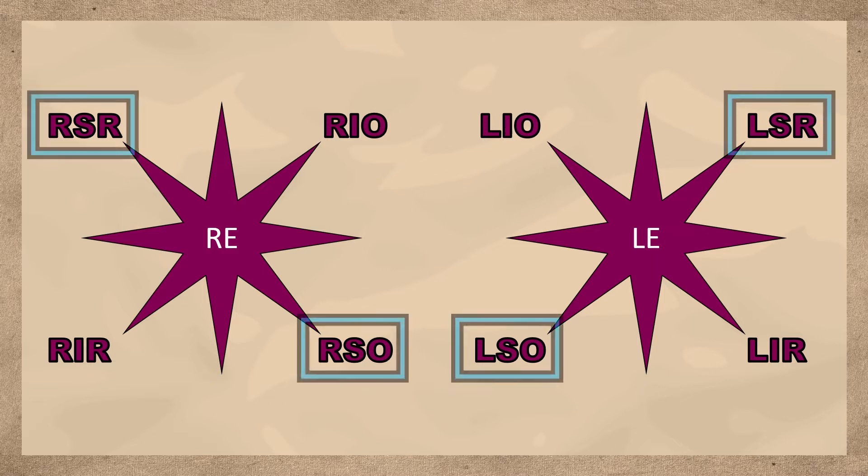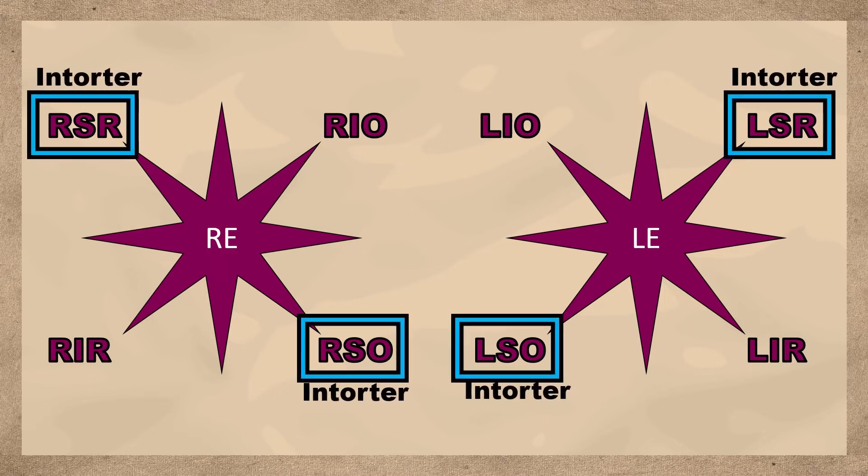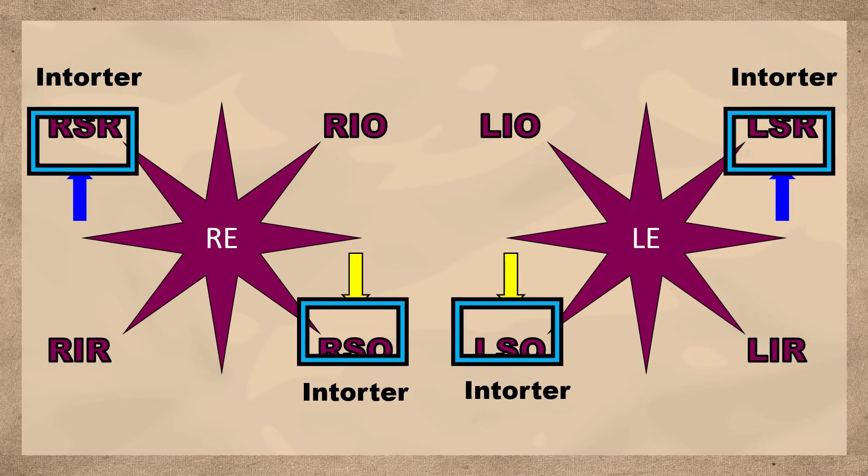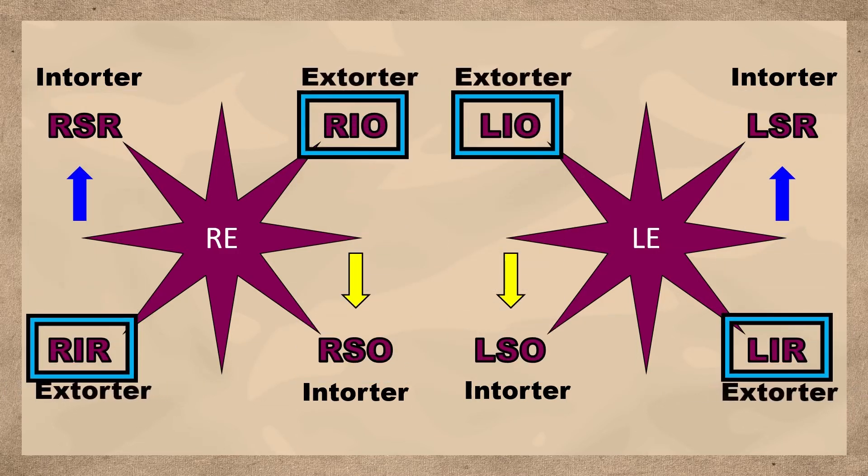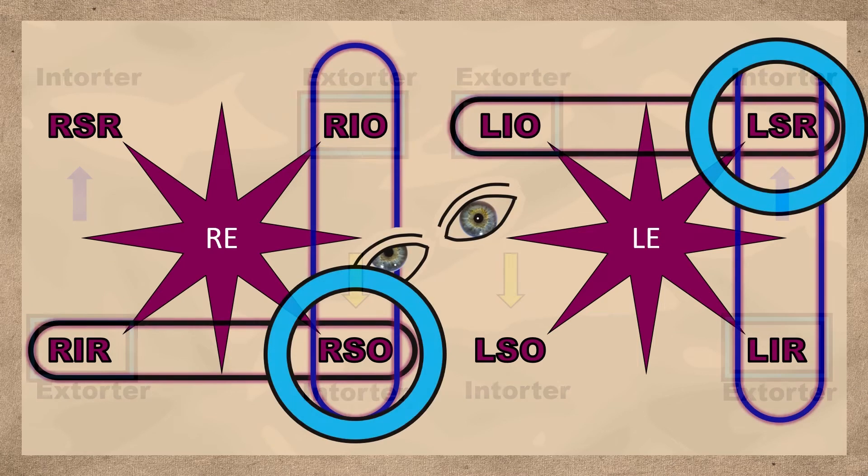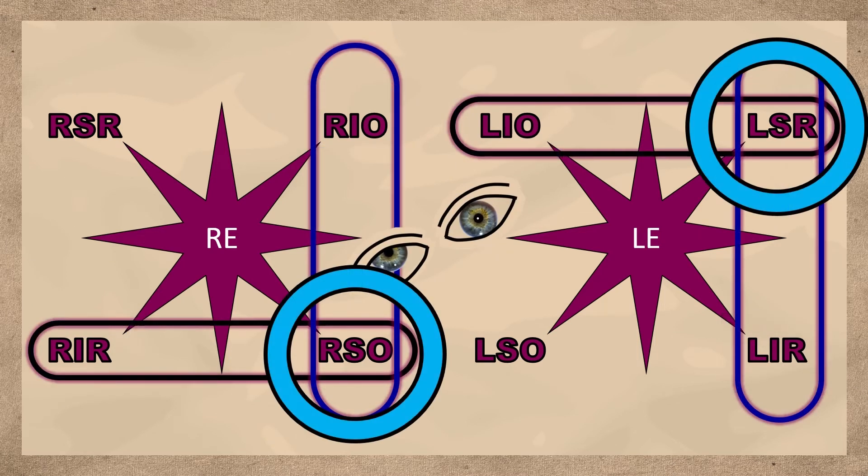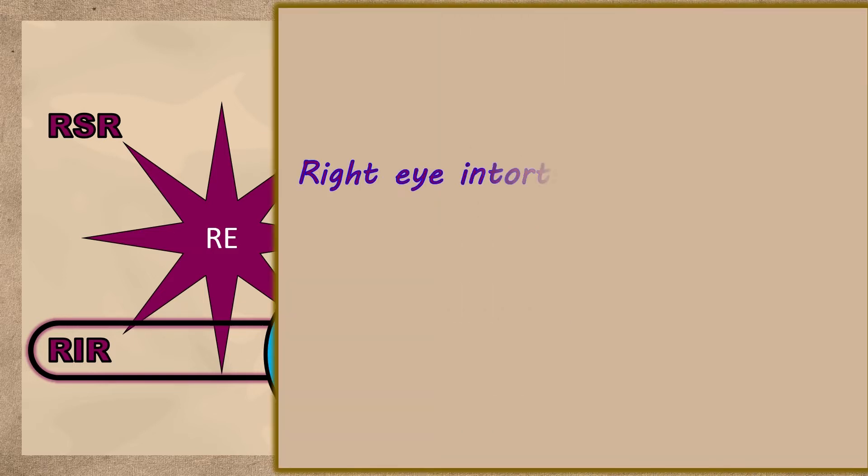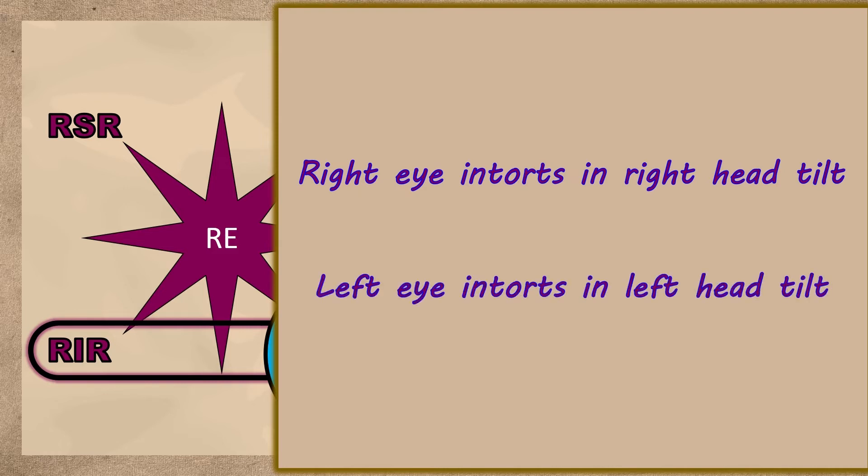Each eye has a pair of intorters. Superiors are intorters. During intorsion, the elevating action of one cancels the depressing action of the other, thus neutralizing vertical movement. Same case with the inferiors which are extorters. So in this example we have to choose between these two muscles, both of which are superiors and therefore intorters, and we know that the right eye intorts in right head tilt and the left eye intorts in left head tilt.